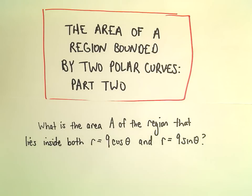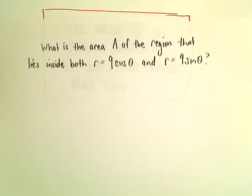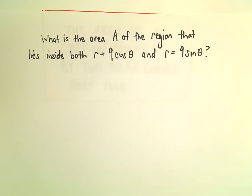All right, here we're going to look at finding another area of a region bounded by two polar curves. We're going to find the area of the region that lies inside both r equals 9 cosine theta and r equals 9 sine theta.